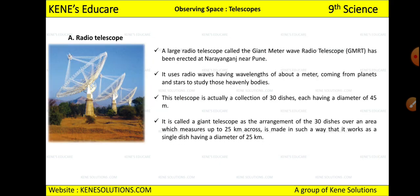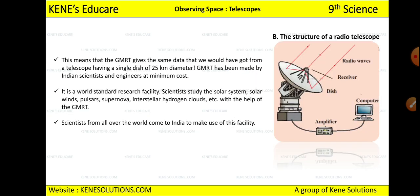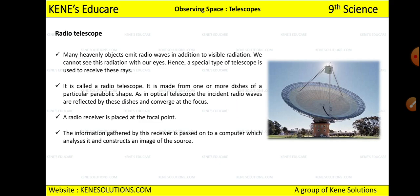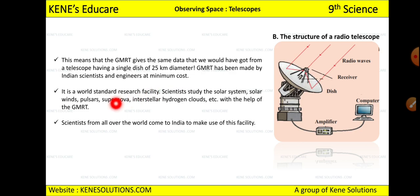GMRT stands for Giant Metrewave Radio Telescope. It gives the same data that would be obtained from a single dish of 25-kilometer diameter. GMRT has been made by Indian scientists and engineers at minimum cost, making it an economical yet powerful research instrument.